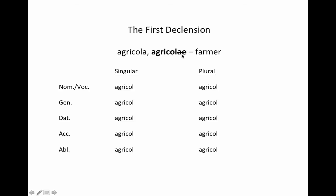To this stem, we add our case endings that you need to memorize, because these are the same endings that will be added to all first declension nouns in Latin. They are: singular — a, ae, ae, am, ā, a; plural — ae, arum, is, as, is. Note that the nominative and the vocative case are the same, and this will often occur, though you'll see occasions when it won't in different declensions. For the first declension they will always be the same. So what you need to do is start memorizing your cases, their uses, and all of these endings.